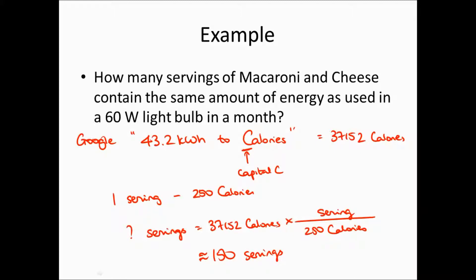In other words, if I leave a light bulb on all month, I need to basically burn, and because of inefficiency, I need to actually burn even more than 150 servings of macaroni and cheese or 75 packs of macaroni and cheese to keep it going.